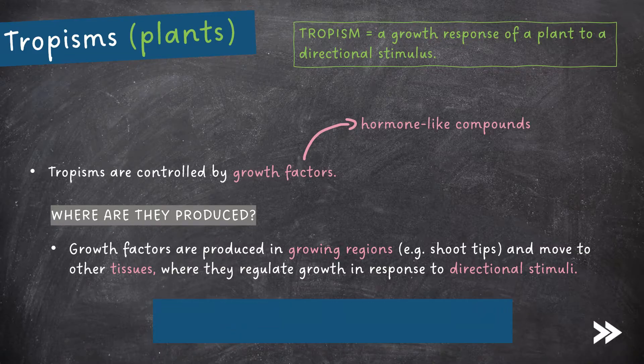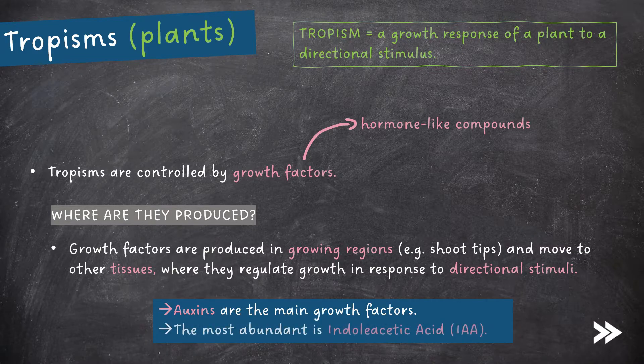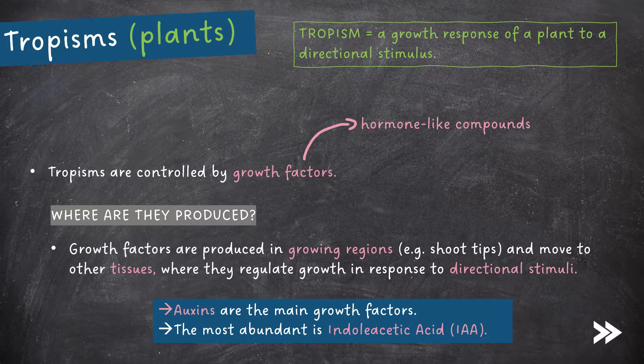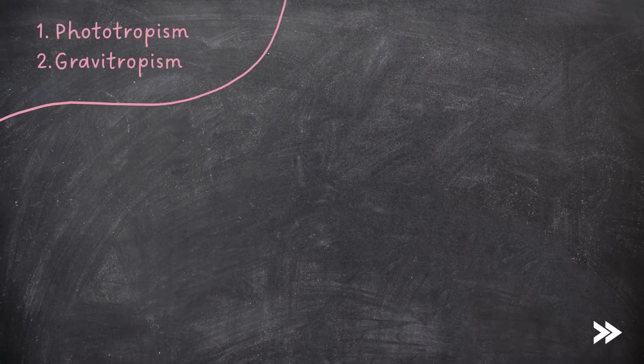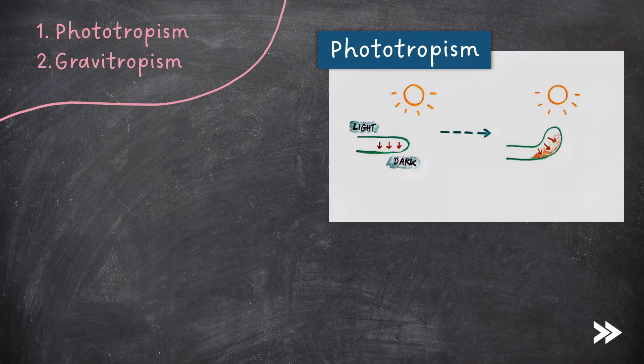Auxins are the main growth factors, the most abundant of which is indoleacetic acid, IAA. For tropisms, we need to know two different types of response, photo- and gravi-tropism. So, let's start with phototropism.